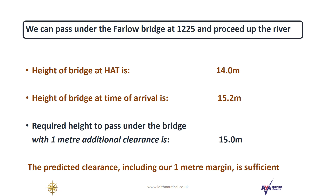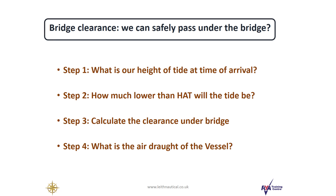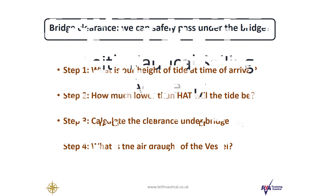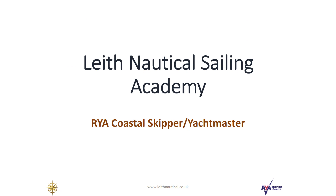So the predicted clearance, including our 1 meter margin, is sufficient. Here's a reminder of the four steps that we followed so that we could establish that we can safely pass under the bridge. That's how we calculate if we can safely pass under a bridge. My name's Paul Murray from Leaf Nautical Sailing Academy. We hope that you've enjoyed the video. Thank you for watching.